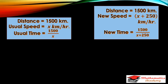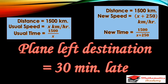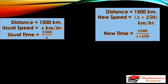On the top of the screen you will see the usual speed, time, and distance, and the increased speed, distance, and time. Since the plane left 30 minutes late, the time taken at the usual speed will be greater than the time taken at the increased speed.